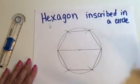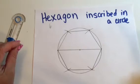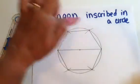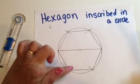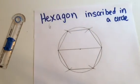And there you have it. You have a perfectly inscribed hexagon inside a circle. One, two, three, four, five, six. And that's it.